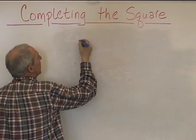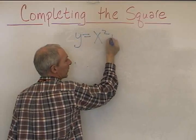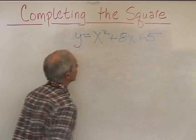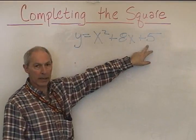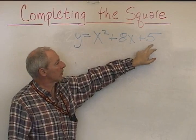The first equation is y is equal to x squared plus 8x plus 5. In this form, we have the y-intercept information here. For this parabola, the y-intercept is 5.